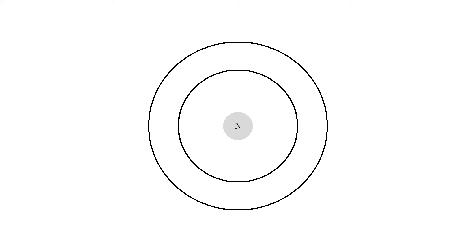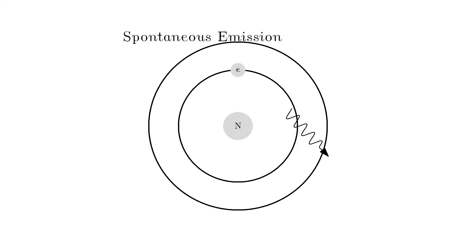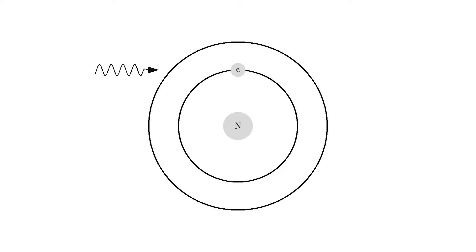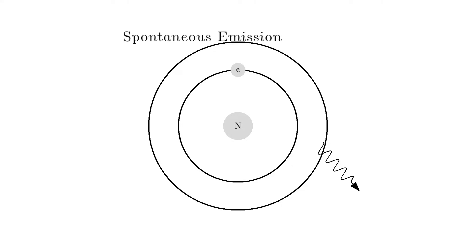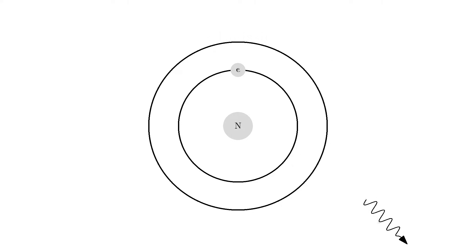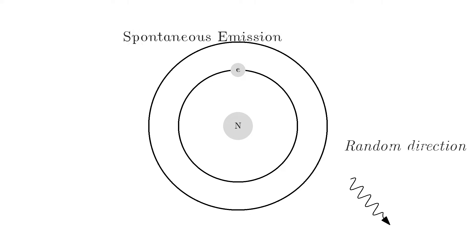This transition requires some energy. One way to get that energy is for the electron to absorb a photon — that's called stimulated absorption. Once the electron is in an excited state, it will return to a lower state after some time. It will relax, and we call that spontaneous emission. The energy that the electron had will have to go somewhere, and so it goes to a photon, which will be sent out in a random direction.